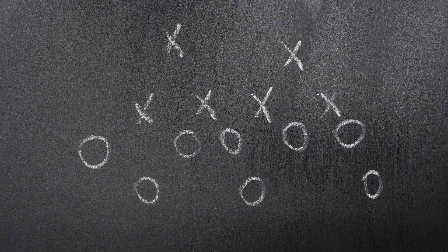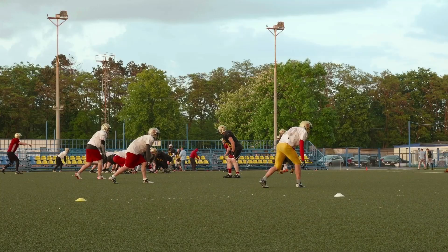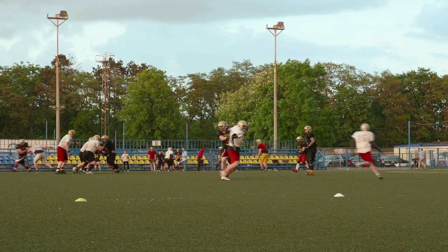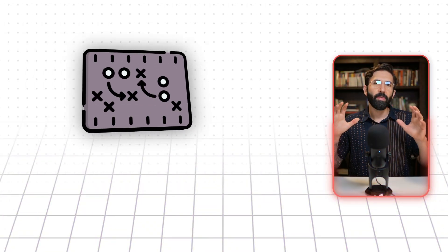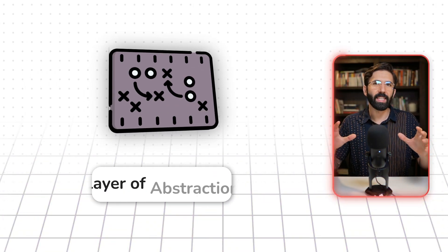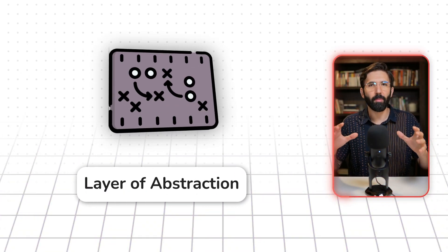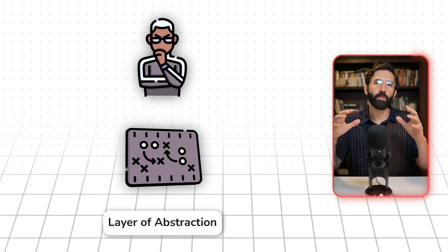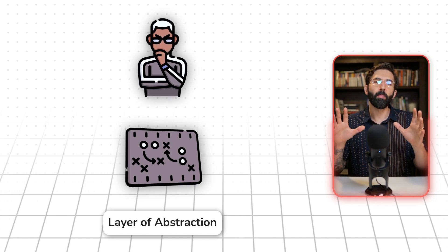He teaches those plays to the individual players on his team, so that during game time all he has to do is say the name of a play and his team knows exactly what to do. In this case, the playbook is a layer of abstraction that provides the coach with a higher-level interface.